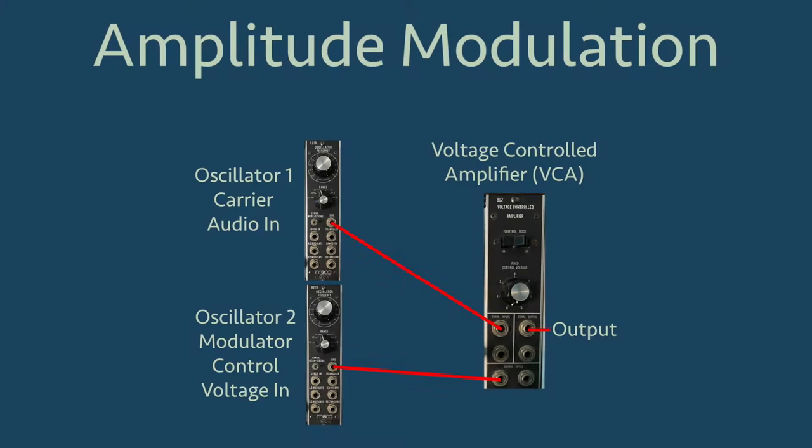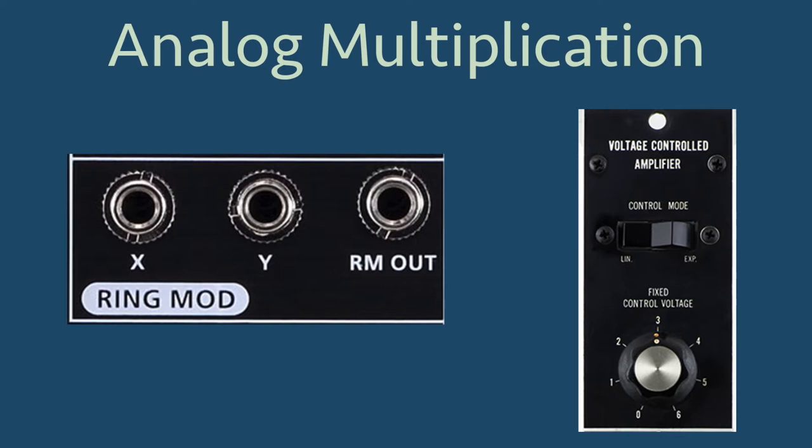In another video, we discussed amplitude modulation and saw how the product-to-sum identity from trigonometry was used to explain what we observed. In this video, we will explore more with that multiplication by looking at the ring modulator and the voltage-controlled amplifier on an analog synthesizer.